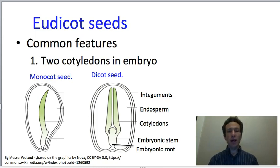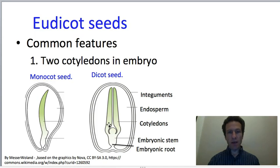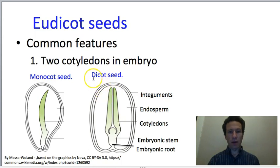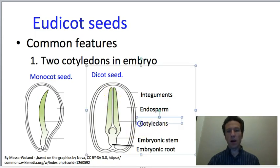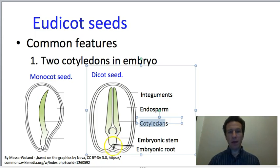Eudicots have two cotyledons in their seeds—that was actually the eudicot-type seed shown earlier. Remember monocots have only one cotyledon. 'Dicot' literally means 'di' for two and 'cot' short for cotyledons. Cotyledons are embryonic leaves, and we've also got the embryonic stem and embryonic root in the seed, which will eventually form the tap root.